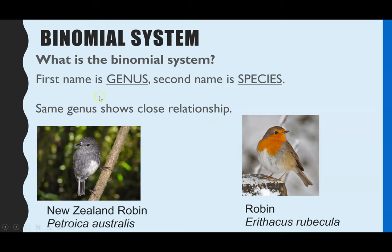The advantage of the binomial system is it gives you a much better idea of how closely related organisms are. If we just use common names in English, it can be very misleading. We've got the New Zealand robin and just 'robin' — you might think they're closely related, but they're not. We can see from the binomial name that they're not the same species and not even the same genus.